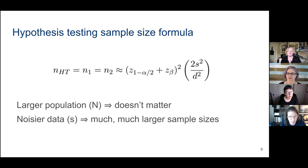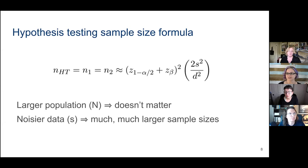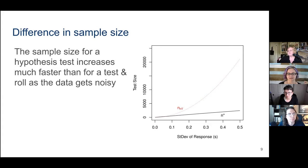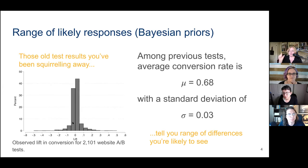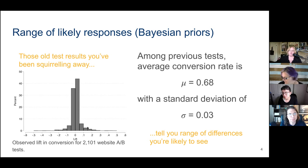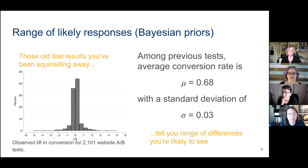Merit asks: is the small S in the formulas the average standard deviation of baseline conversion rate? Yes — it's P times one minus P if it's a conversion rate, but we wrote it as S because responses can be sales or time on site. Sigma is the variance of the effect size. So if the curve of lift in previous experiments is very spread out — lots of big lifts in one direction or another — you should run a smaller test. If it's bunched up, run a bigger test.